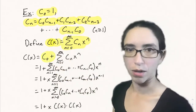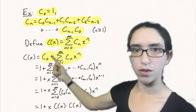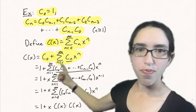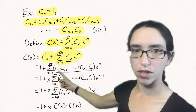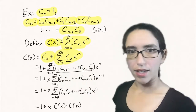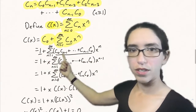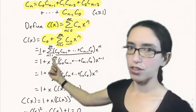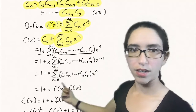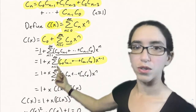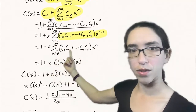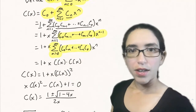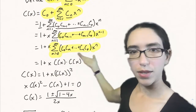Let c(x) be the generating function of the Catalan numbers. Let's pull out the initial value c0 and write 1 plus the sum as n goes from 1 to infinity of c_n·x^n. Since c0 is 1, and all the c_n terms for n at least 1 satisfy the recursion, we can plug that in. This is essentially the (n minus 1)th convolution of c with itself, so we factor out an x. Re-indexing — starting at n equals 0 and using the nth convolution times x^n — just rewrites the summation in a slightly different way.